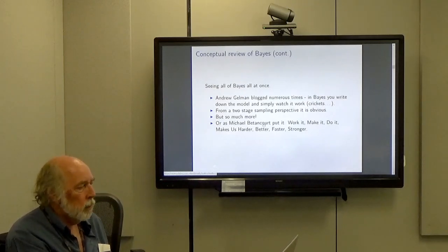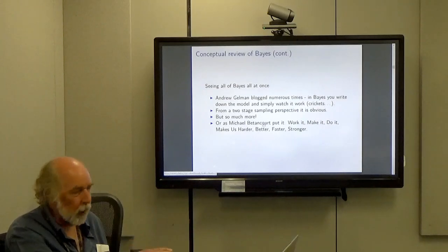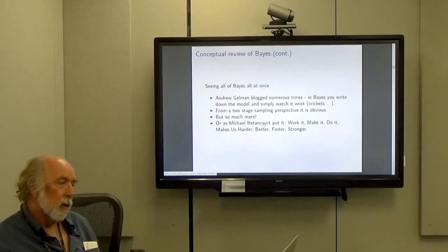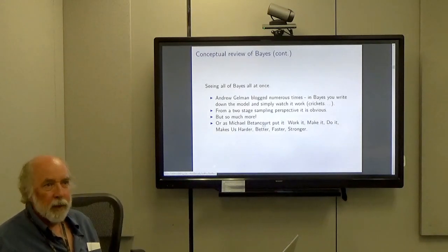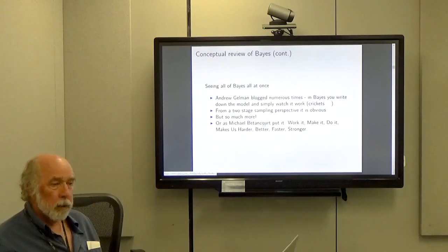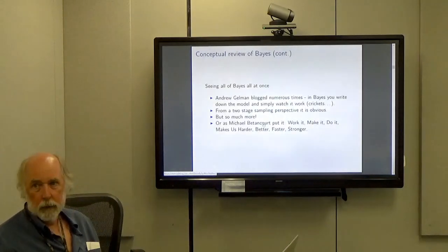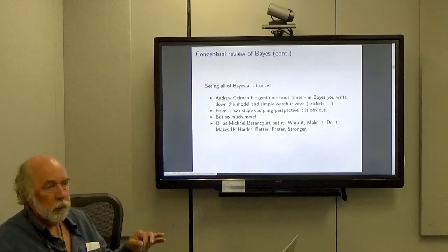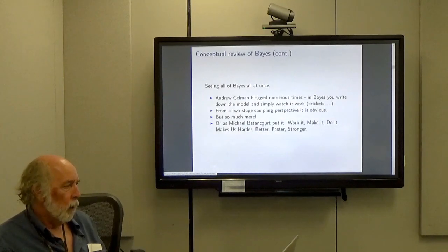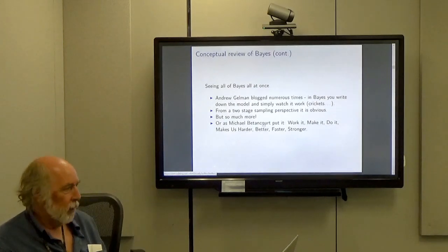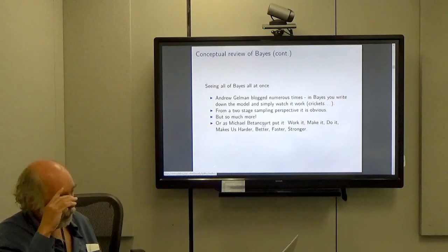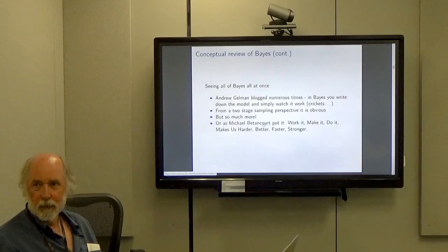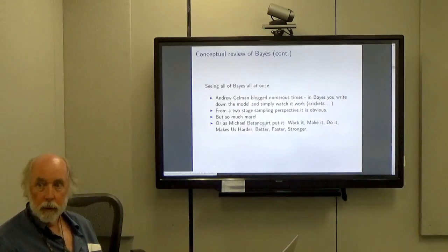One of the reasons why you want to do this is Andrew Gelman, who blogs the most on that blog I mentioned earlier, he blogged numerous times this expression: in Bayes, you write down the model and you simply watch it work. The other commenters, neither the other authors, did not seem to get it. But I'll show from a two-stage sampling perspective, it is obvious. But there's so much more. Michael Betancourt, whose work I've referred people to, he puts it like this: work it, make it, do it, referring to the Bayesian model, to make us harder, better, faster, stronger. So we want to do better Bayesian analysis, and this two-stage sampling is the way that it's enabled.